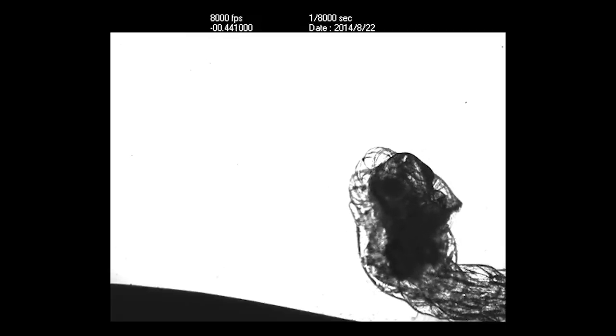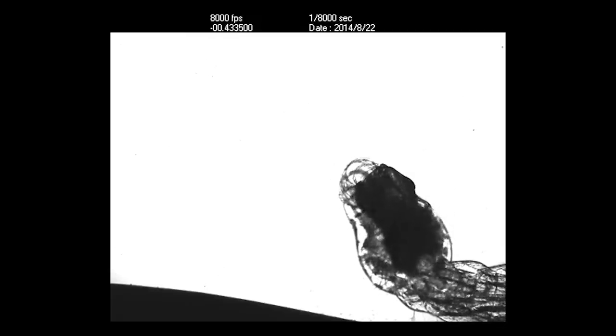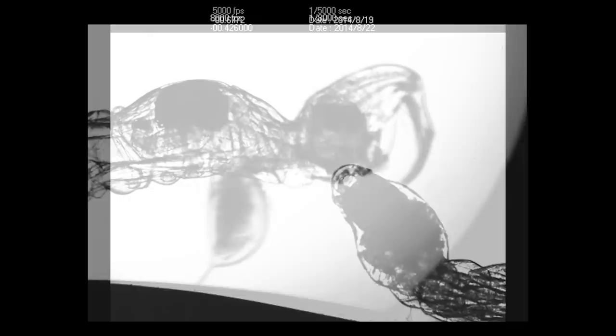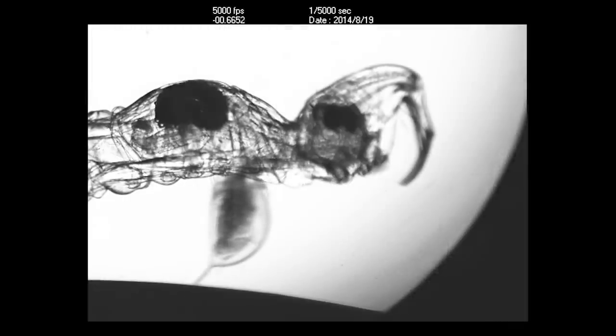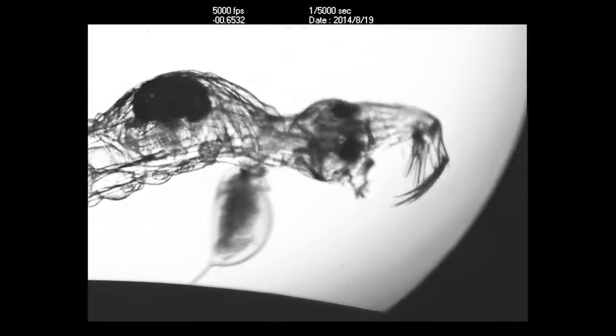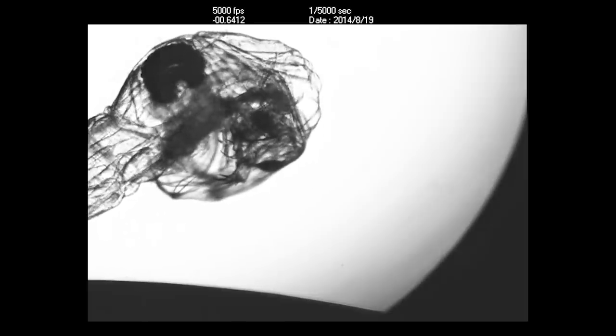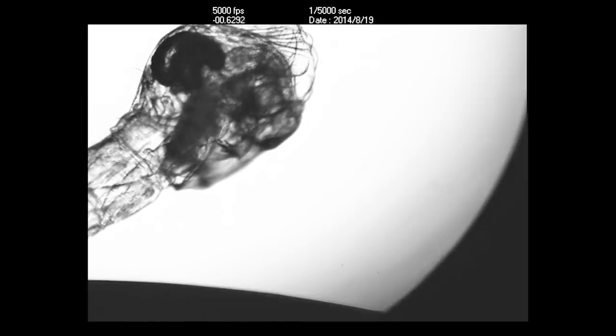This may look like something out of a horror film, but it's actually a glass worm. It's the larval form of a very common lake insect called the phantom midge, and it's evolved a kind of horrific way to catch zooplankton.